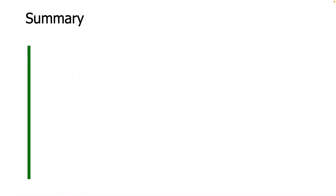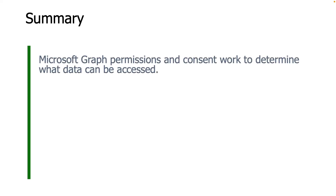Microsoft identity, permissions, and user consent all play a role in securing data that Microsoft Graph accesses. Here's a quick review of what you learned in this module. First off, we talked about how Microsoft Graph permissions and consent work together to determine what data can be accessed.